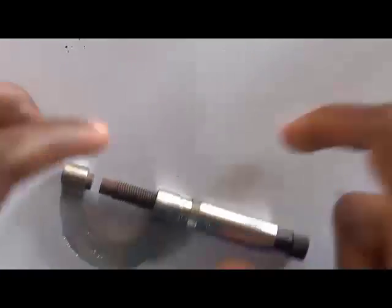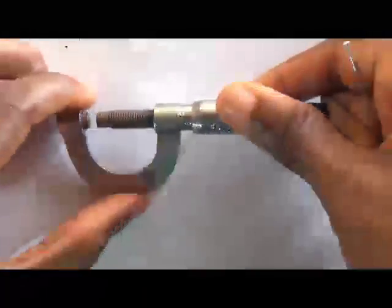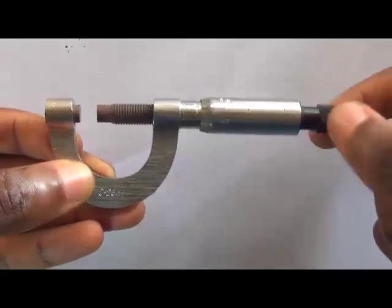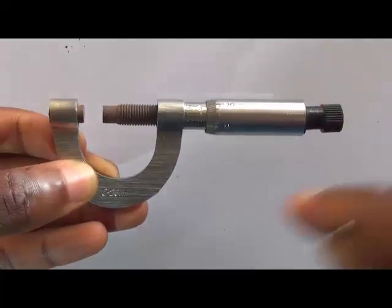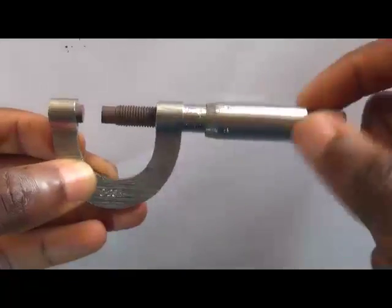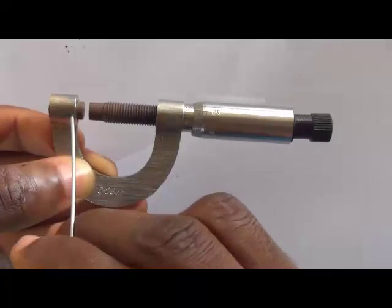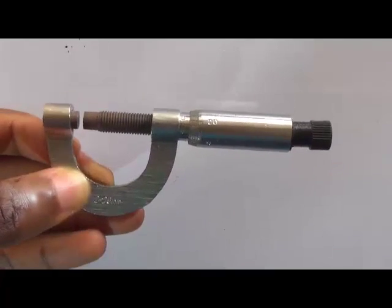It has a knob which is turned while trying to take measurements and this knob is called the ratchet. This is the spindle, the one that turns and moves closer to the anvil, which is the stable part of it.